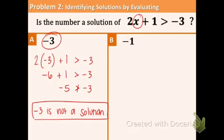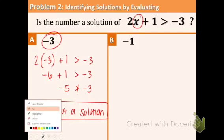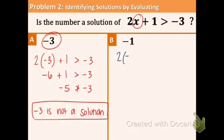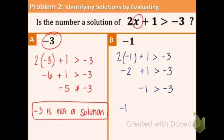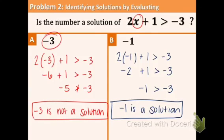Now, let's try the next one. We're plugging in negative 1 this time. 2 times negative 1 is negative 2 plus 1 greater than negative 3. What is negative 2 plus 1? That's negative 1. Is negative 1 greater than negative 3? The answer is yes, it is greater because it's less negative than the negative 3. So we're going to write right here, negative 1 is a solution. What we did was we just plugged in the original value for the x and did our operations.